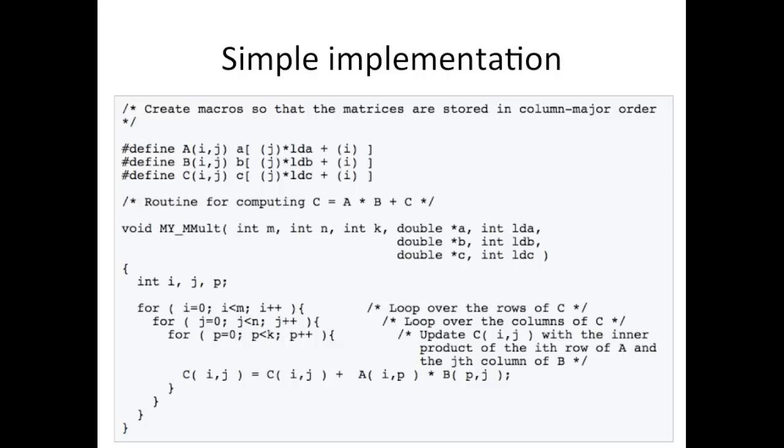and what it implements is A times B plus C overwriting C. C actually uses row-major order, and because most computational scientists use column-major order, what we do is we create linear arrays A,